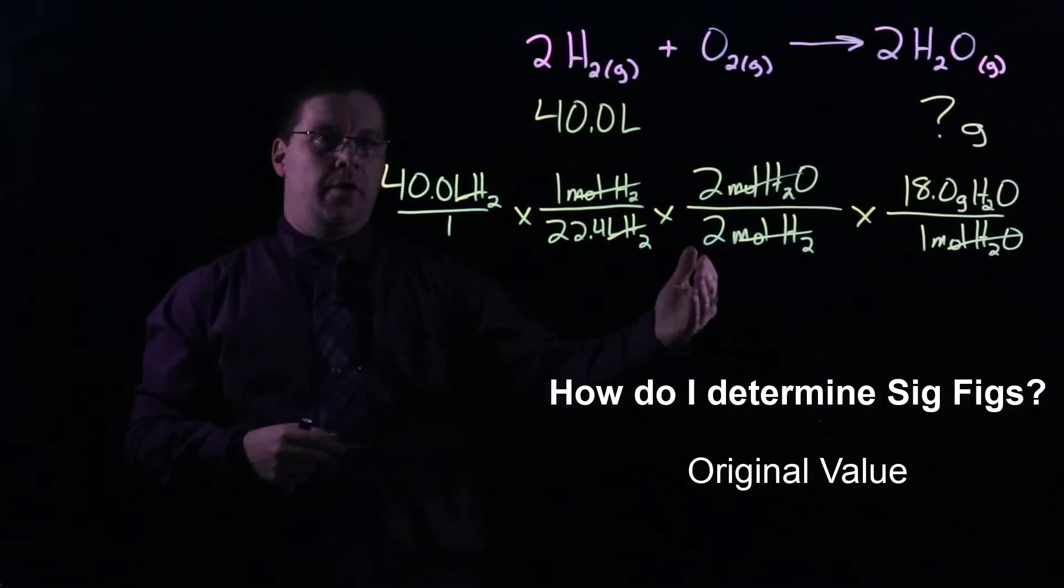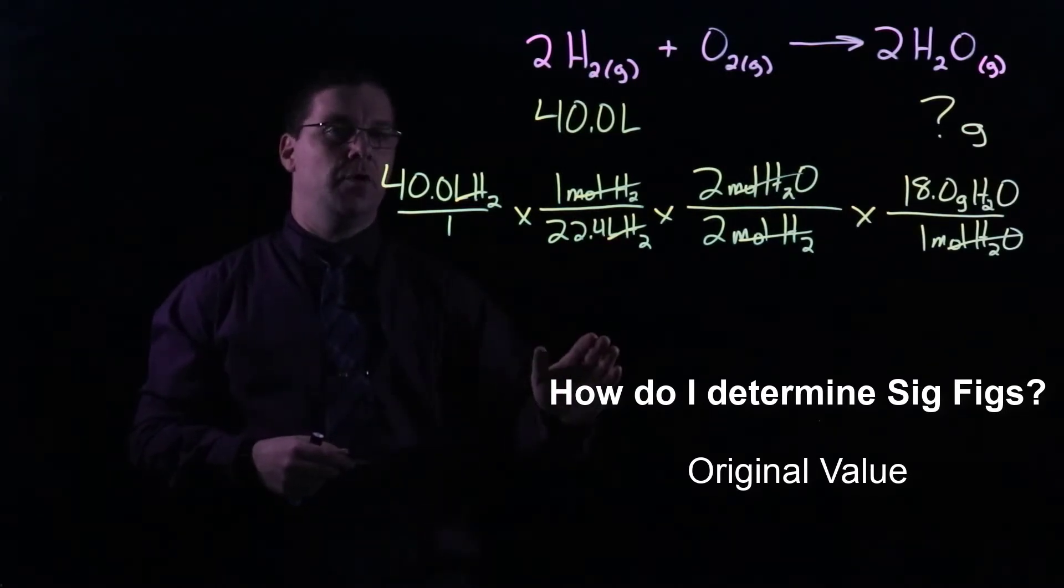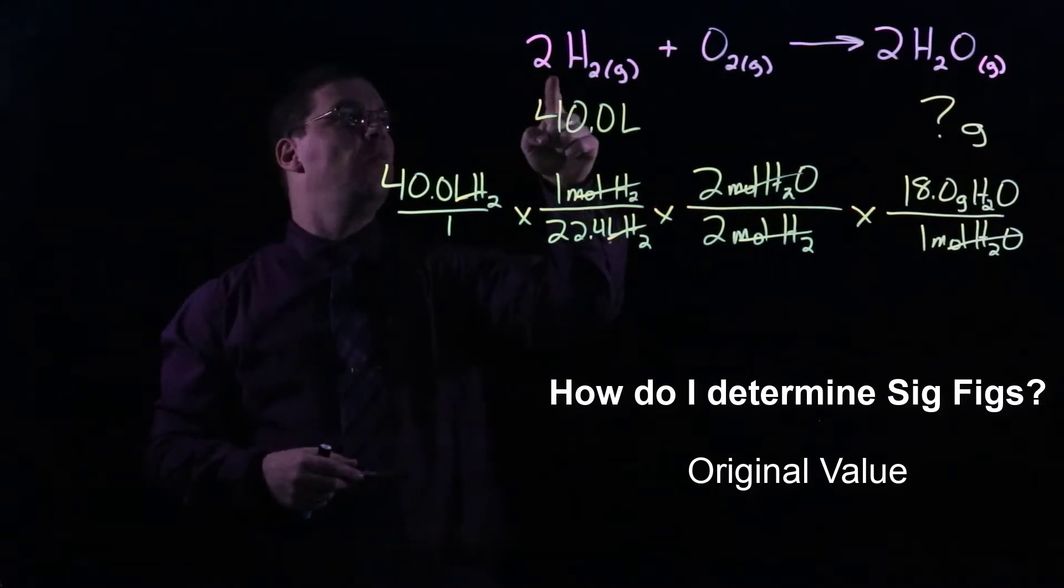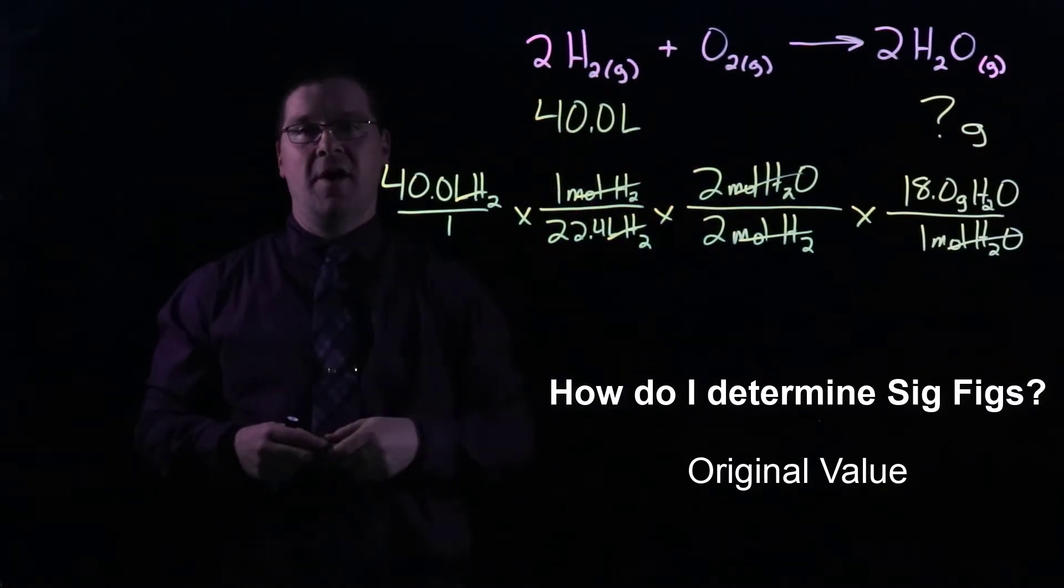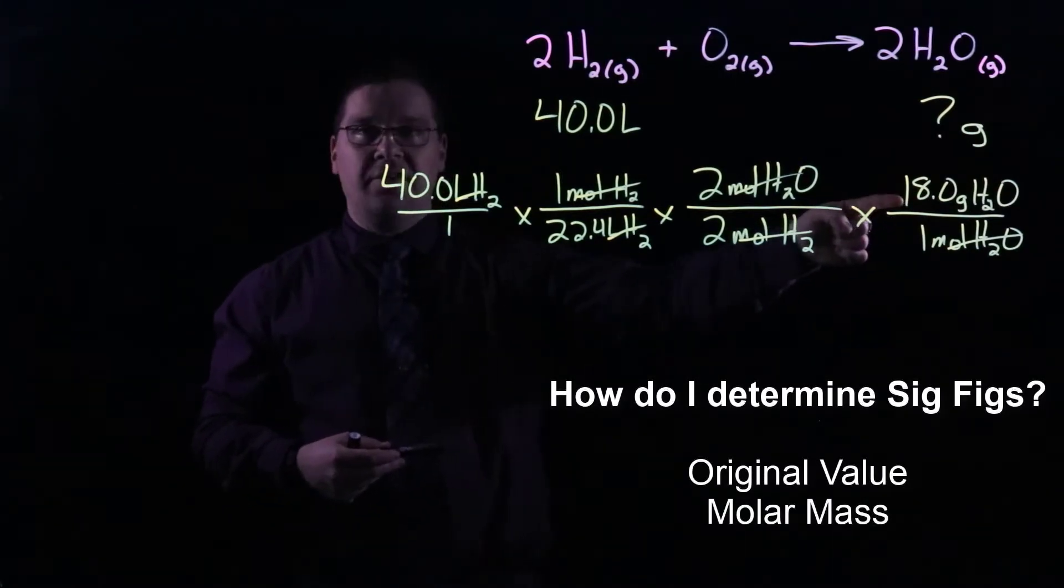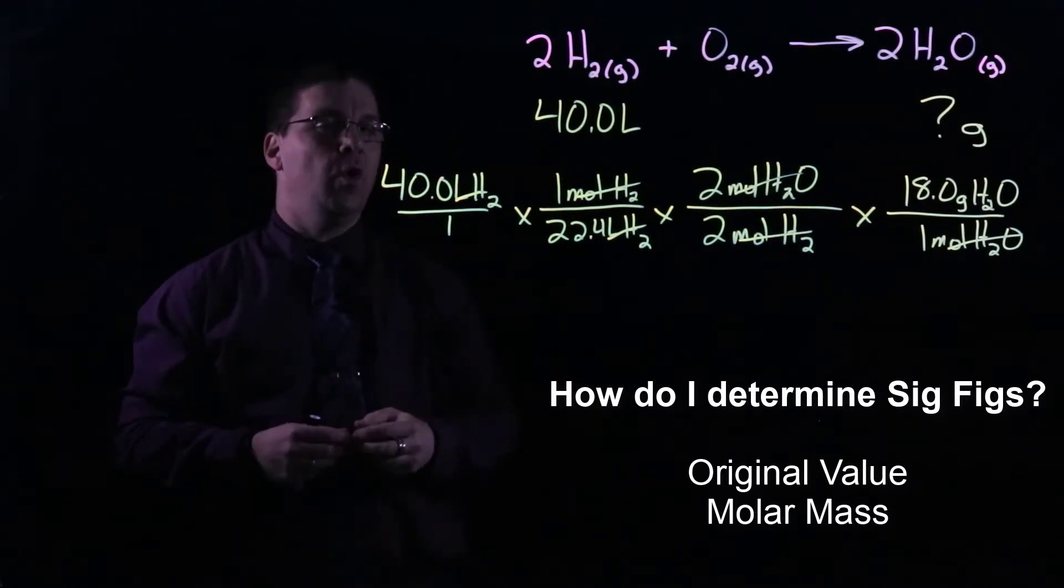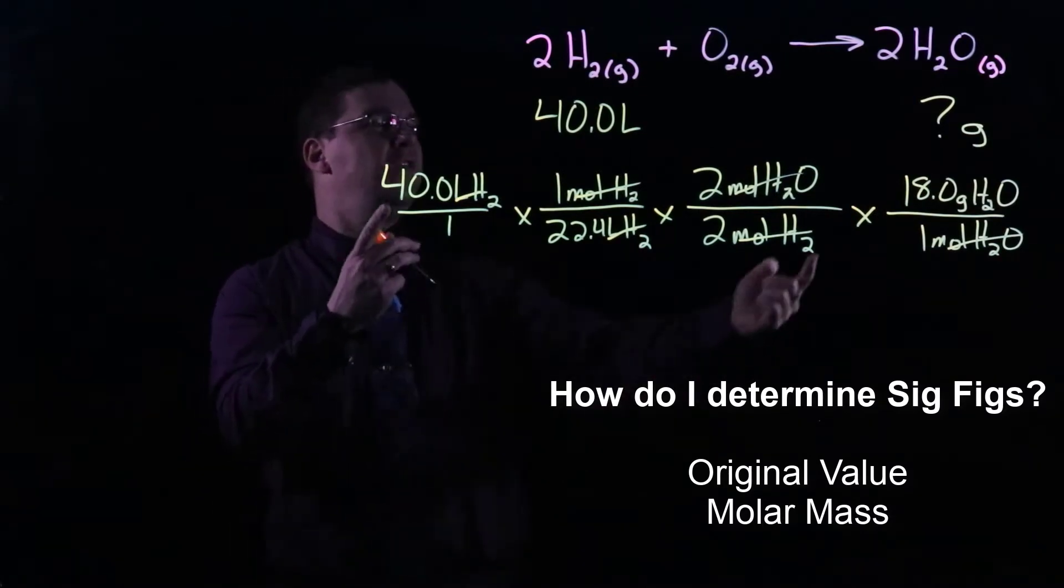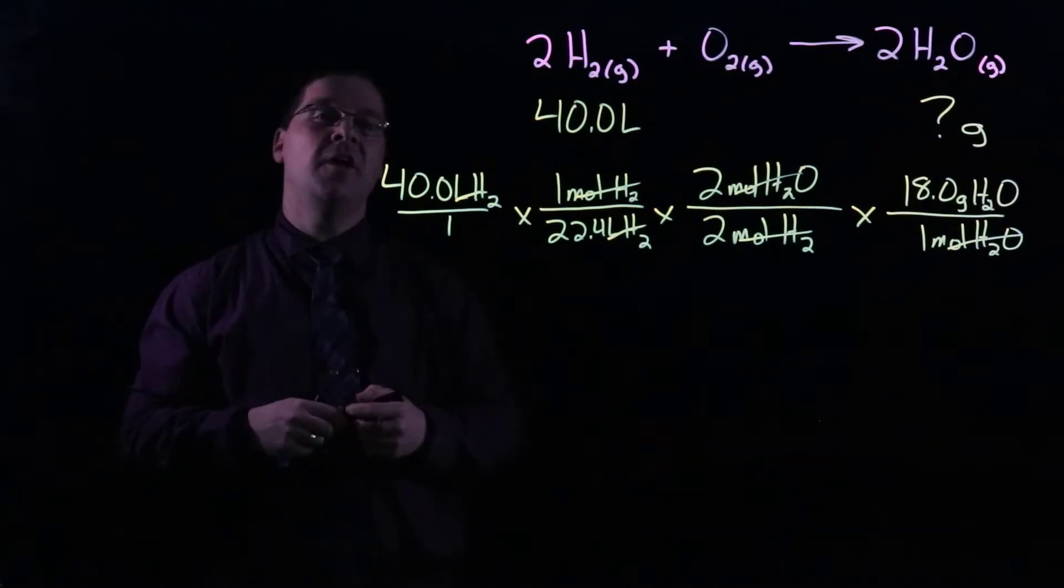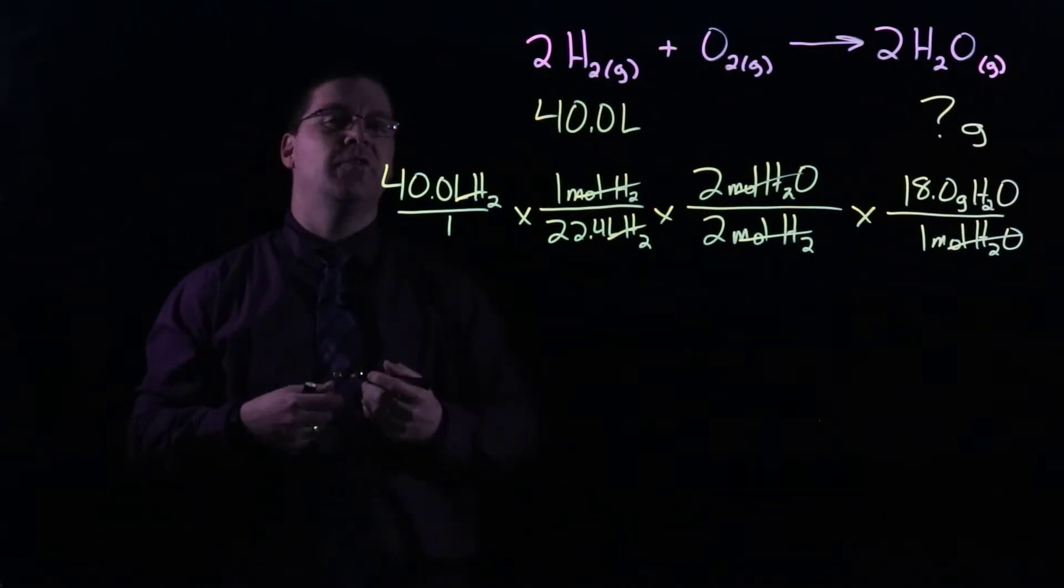All the other values, though, are 22.4 liters for every one mole, that's considered an exact value. We don't use it for sig figs. The mole ratio, those numbers come from the whole number coefficients in the balanced equation. So they're considered exact. We don't consider them. Molar mass, because we are using rounded-off values from the periodic table, we are going to want to consider those. So between these two, each of them have three sig figs. So our final answer should have three significant figures. And in this case, your answer comes out to 32.1 grams of H2O.